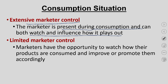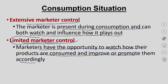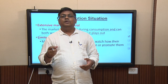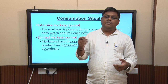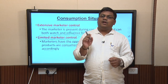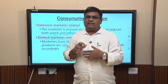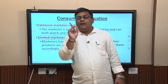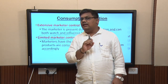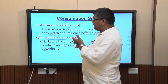The next type is limited market control. In this situation, the marketer has the opportunity to watch how their products are consumed and improve or promote them accordingly, but cannot influence the consumer directly. Think of food stalls on wheels or an ice cream store outside a mall — the marketer can see you buy an ice cream but cannot dictate where you are going to throw it or how you are going to eat it. So the marketer can observe buying behavior and improve it, but cannot interfere.